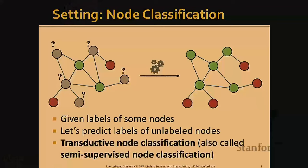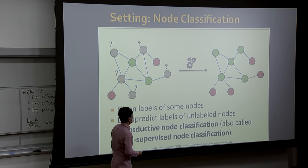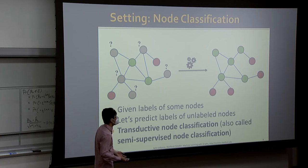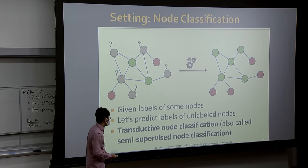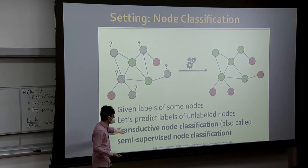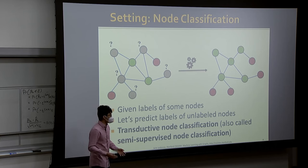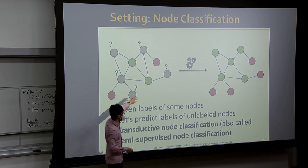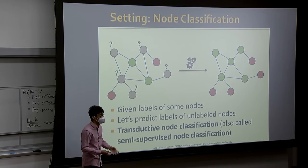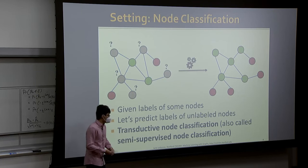Here's our setting: suppose we're given a graph where only a very few nodes are labeled, and we want to predict the labels of the remaining nodes. Let's say we have two classes — green and red — and we want to make predictions for all the remaining gray nodes. The terminology for this classification is transductive node classification. It's called transductive because all the training and validation data are on the same network — we only focus on one network and don't need to generalize to a separate network.